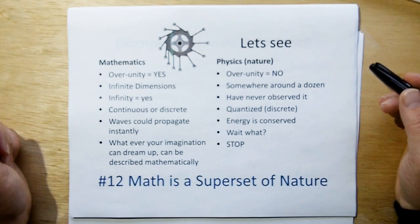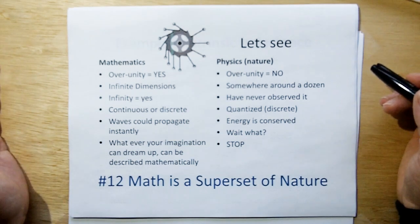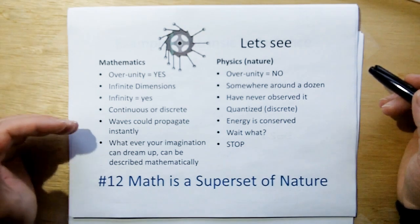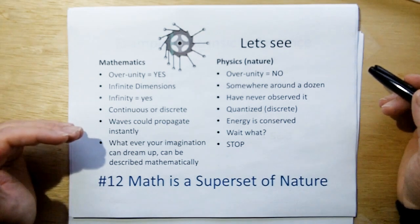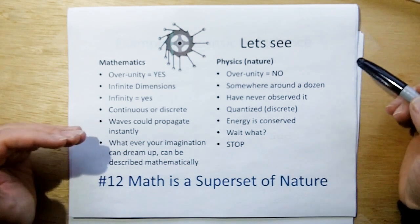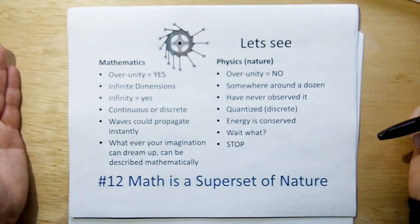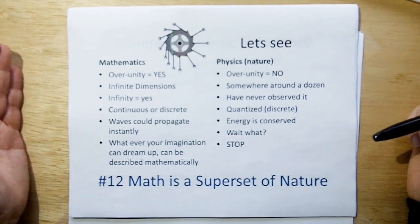In mathematics, you can describe waves that propagate instantaneously. In physics, you don't ever have instantaneous propagation. And in mathematics, you can describe over-unity and all kinds, but in nature, energy is conserved. In mathematics, it doesn't have to be.